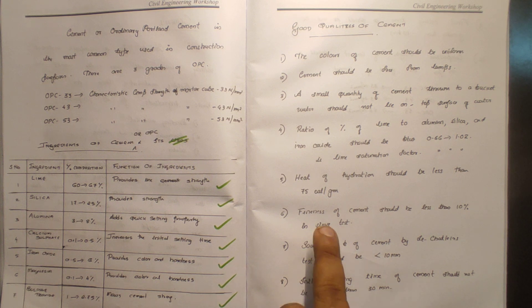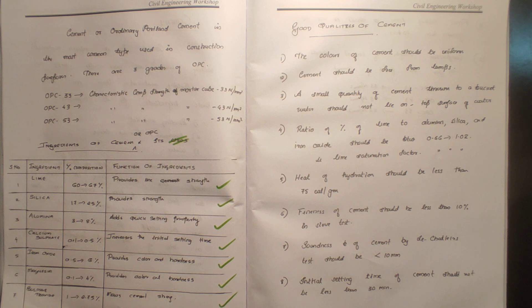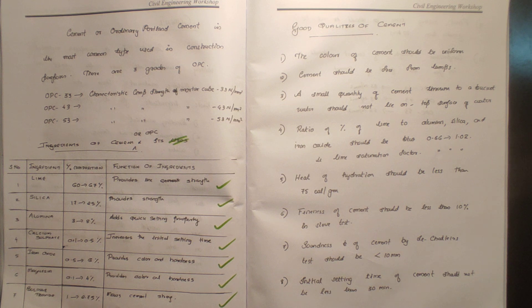The heat of hydration of cement should be less than 75 calories per gram.